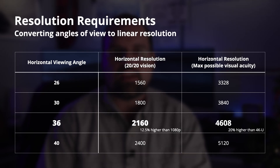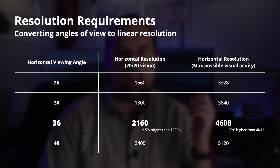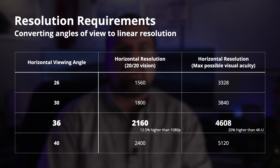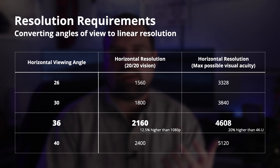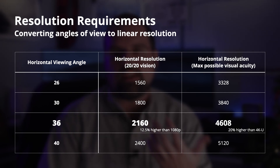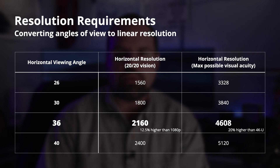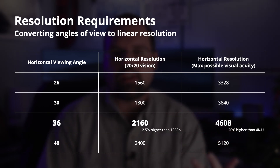Since we're talking about screen coverage in degrees and visual resolution in pixels per degree, it's a simple matter to multiply the two together to figure out what you actually need. Surprisingly, the numbers are not insane. For a 36-degree angle of view at 20/20 vision, you're talking about 12.5% more resolution than 1080p — which translates to about 20% higher resolution than 4K UHD. That's 2160 pixels image width for 20/20 vision, and 4608 pixels image width to satisfy the theoretical limits of visual acuity.